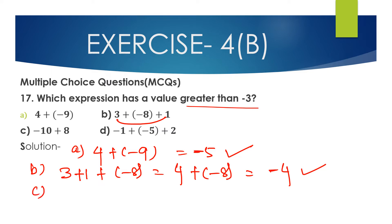Option C: minus 10 plus 8. When we add two integers with different signs, we subtract the smaller from the bigger — 10 minus 8 equals 2 — and place the sign of the bigger integer. 10 is negative, so the answer is minus 2.